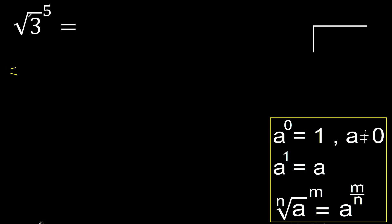Here, there is no number, therefore it is 2. 5 is greater, therefore divided by 5, divided by 2.